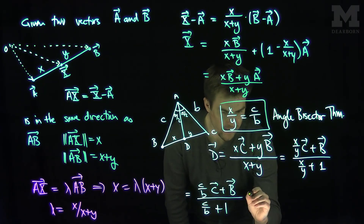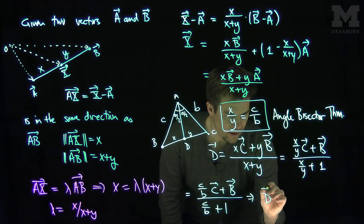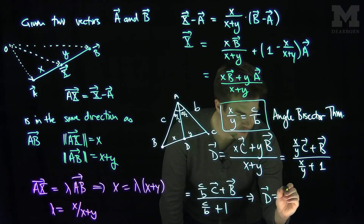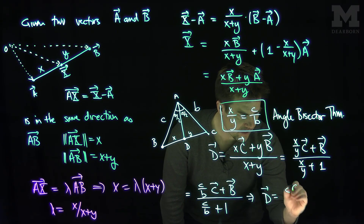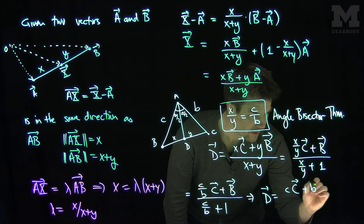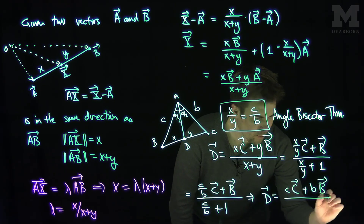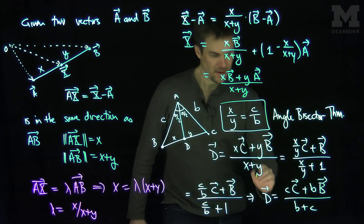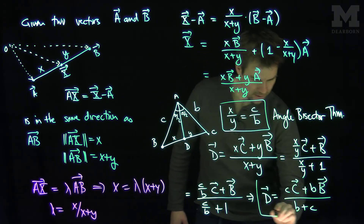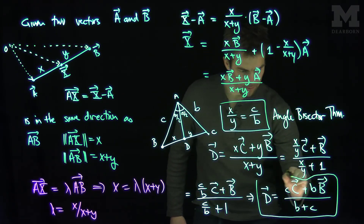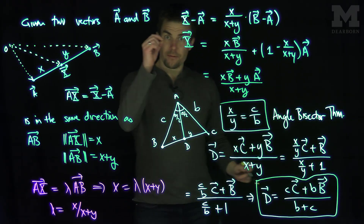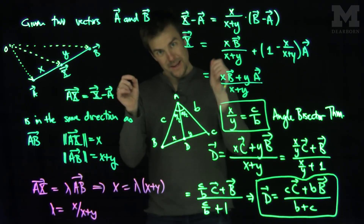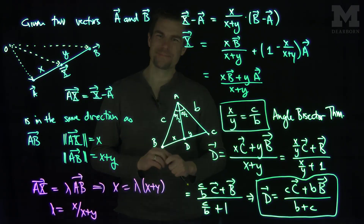Multiplying top and bottom by b, we conclude that D, the vector form of the foot of the angle bisector, equals c times vector C plus b times vector B, all over b plus c. This is the formula for the foot of the angle bisector from vertex A to the side BC. Thank you very much.